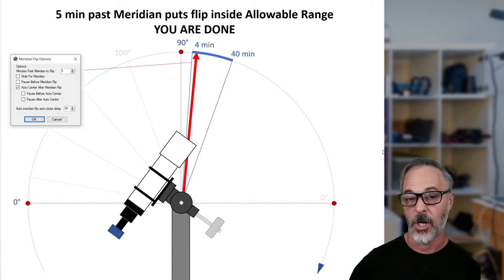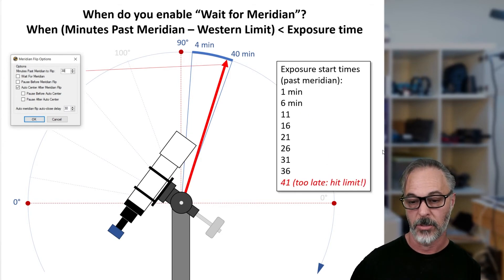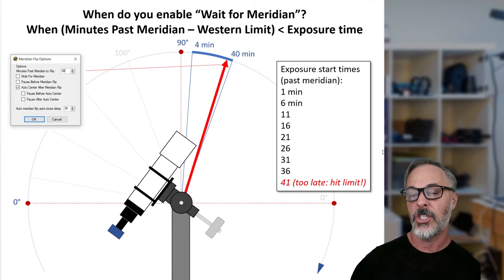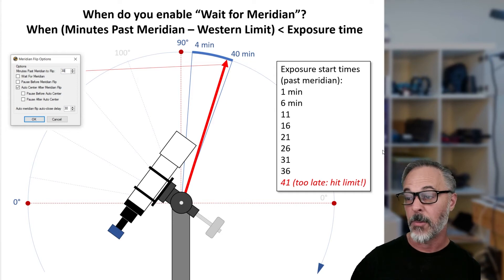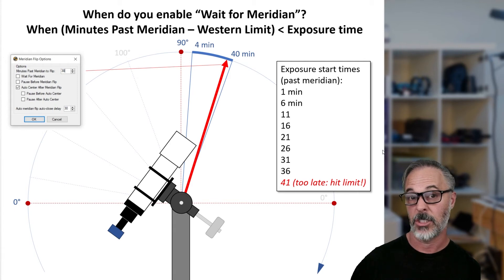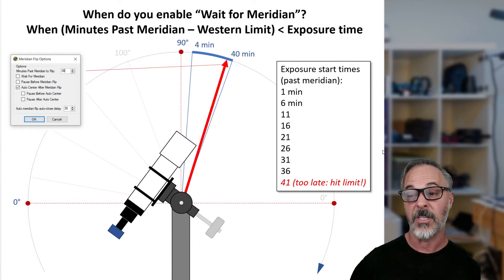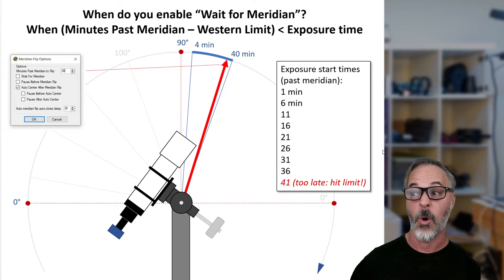Now let's look at an example where we want the 'Wait for Meridian' option to be invoked. You'd use this when you want to be aggressive and image as much through the meridian as possible, invoking the flip as late as you can. In this example, we're going to set 'minutes past meridian to flip' to 38 minutes — that is only 2 minutes before the western limit. Remember, the western limit will literally stop your mount from tracking, so we don't want to hit it.